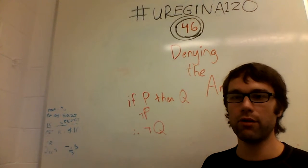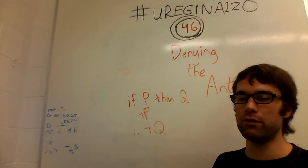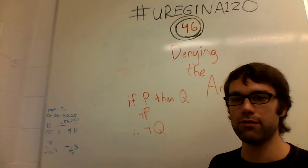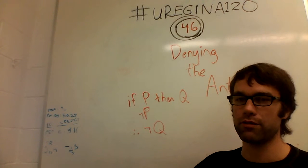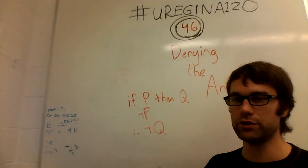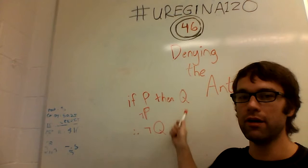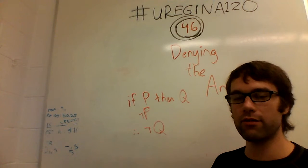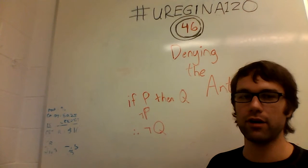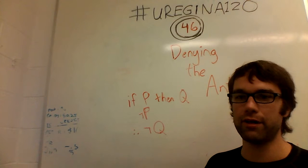So any time you see an argument of this form — if you can identify any time someone says 'if something happens, then something else will happen' and then makes a conclusion based on that — if you can map it to this argument form, you can know that it is not a valid way to conclude things from it.